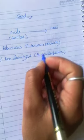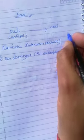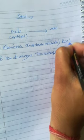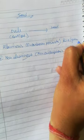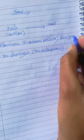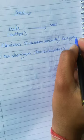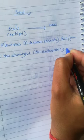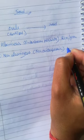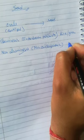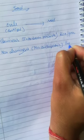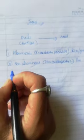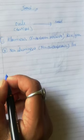Examples of albuminous seeds are rice and wheat, where endosperm persists inside the seed. Leguminous plants such as the pea plant are examples of non-albuminous seeds, where the endosperm is completely consumed during development. Now I will discuss the parts of the seed.